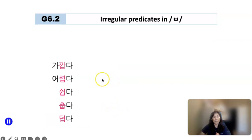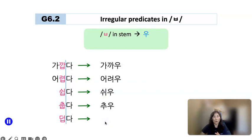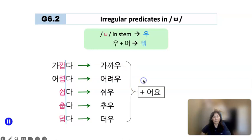Let me provide more examples. 가깝다, 어려우, 가까우, 쉬우, 추우, 더우 — all of them share a common feature: they have ㅂ at the end of the stem. You just follow the basic rule: always remove ㅂ, add 우, and conjugate with 어요.